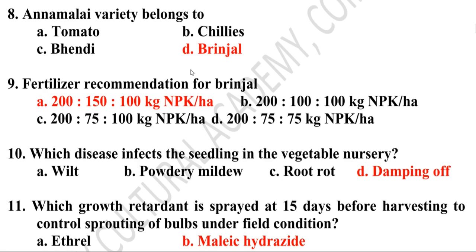Tenth question: Which disease infests the seedlings in the vegetable nursery — wilt, powdery mildew, root rot, or damping off? The correct answer is option D: damping off.